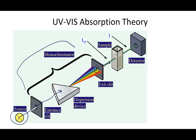That single wavelength goes through your sample. The light going into the sample is the intensity entering, I₀. Some of the light gets absorbed, so the light that makes it out is the intensity past the sample, I. That is what is measured by the detector — comparing the light going in and the light coming out tells us how much light is being absorbed.